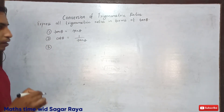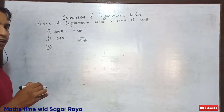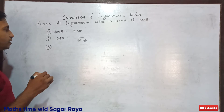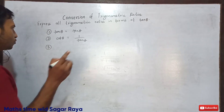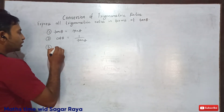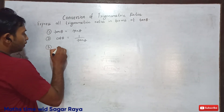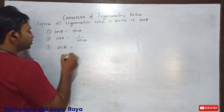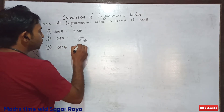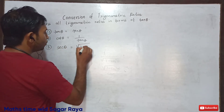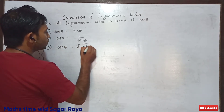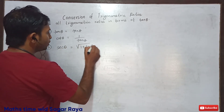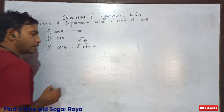We have the relation: sec squared theta minus tan squared theta equals 1. From there we can get the value of sec theta. So sec theta is equal to root under 1 plus tan squared theta.